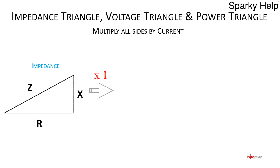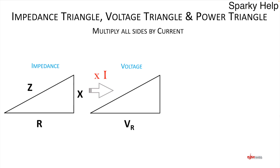If we multiply each of these sides by a current, we get another triangle. I times R gives volts, so this is a voltage triangle. I times R gives the voltage across the resistor: VR. I times Z — Z is the total — gives VS. And I times X gives VX, the voltage across the reactive part of the circuit.